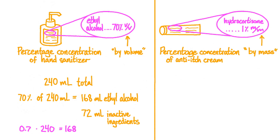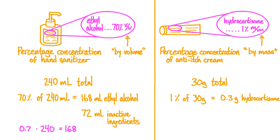M/M means that this percentage concentration is by mass — 1% of the mass of the cream in the tube is hydrocortisone. A small tube of anti-itch cream, about the size of a dry erase marker, might have a mass of 30 grams. 1% of this total mass is hydrocortisone. 1% of 30 grams is 0.3 grams, so there's 0.3 grams of hydrocortisone in the tube. To do this on a calculator: 0.01 times 30 equals 0.3. The remaining 29.7 grams are inactive ingredients.